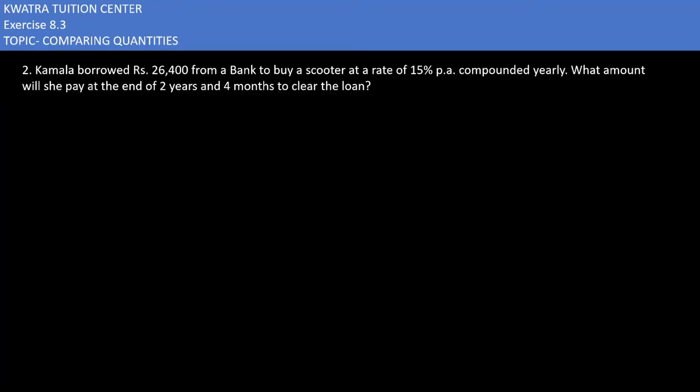What amount will she pay at the end of 2 years and 4 months to clear the loan? How much is it given as 26,400? Rate 15% and time period 2 years and 4 months.